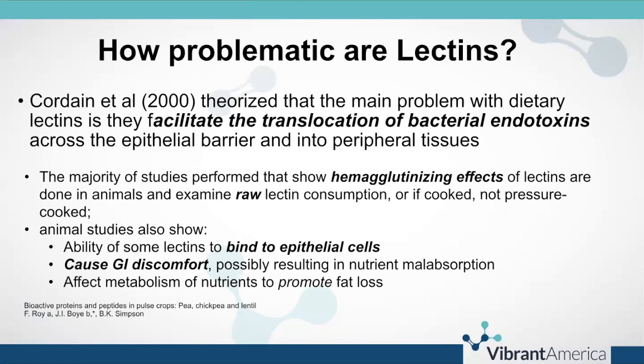The majority of studies showing hemagglutinizing effects — agglutinating red blood cells — from lectins are done in animals. They usually use raw lectin consumption, or if cooked, not pressure-cooked. Pressure cooking decreases or eliminates the lectin structure and renders it essentially inert. So there are limitations: if studies show raw lectins cause hemagglutinizing effects in animals, humans are not consuming raw lectins most of the time. Exceptions might be peanuts, cucumbers, tomatoes, and bell peppers consumed raw, but more problematic grain and legume lectins are not consumed uncooked.